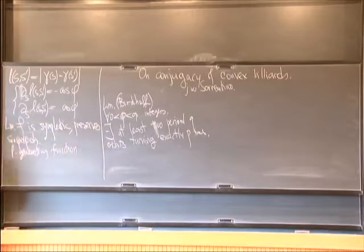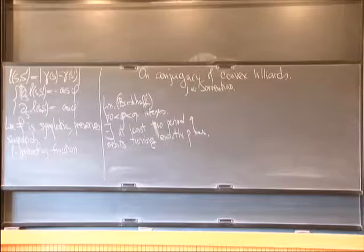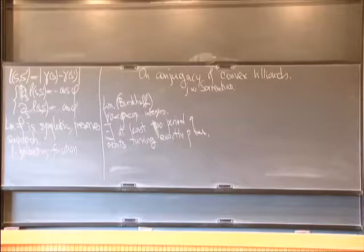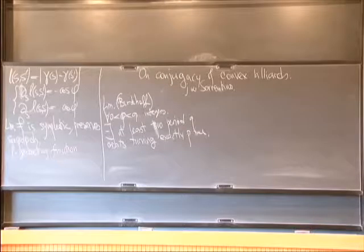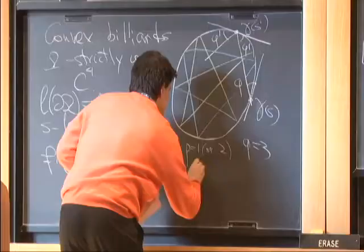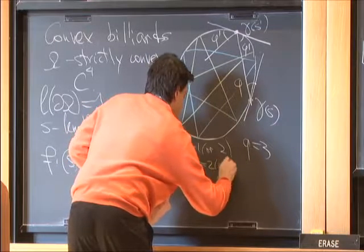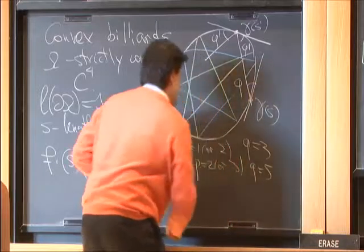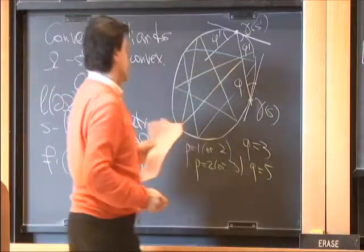These are period-q orbits turning exactly p times. For example, a triangle orbit has p equal to 1 or 2 (depending on orientation) and q equal to 3. For the pentagon, p equals 2 or 3 and q equals 5.